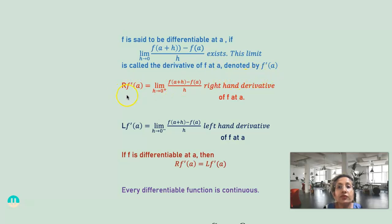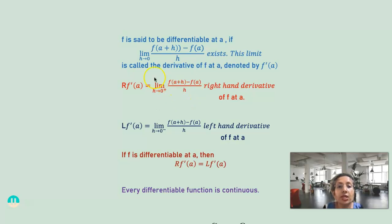Just as we had left hand and right hand limits for continuity, we have right hand derivative of f at a, which is the limit as h tending to 0 from the right of [f(a+h) minus f(a)] by h. Similarly, the left hand derivative of f at a is the limit as h tending to 0 from the left of [f(a+h) minus f(a)] by h. If f is differentiable at a, then the right hand derivative equals the left hand derivative. Just as for continuity the left and right hand limits must be equal, for differentiation also the right hand and left hand derivatives must be equal. Every differentiable function is continuous.